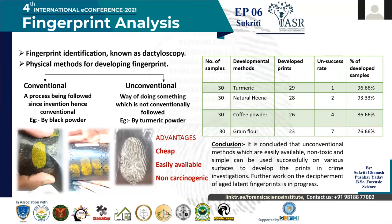The study of fingerprints is known as dactyloscopy. Latent fingerprints are developed by two methods: physical methods and chemical methods. Chemical methods use chemicals to develop latent fingerprints — for example, iodine fuming and ninhydrin. Physical methods involve the use of powder, and can be of two types: conventional and unconventional. Conventional methods are those that have been used for a longer time — for example, black powder.